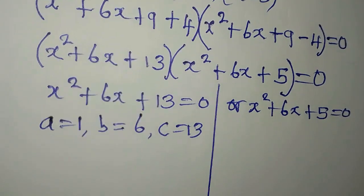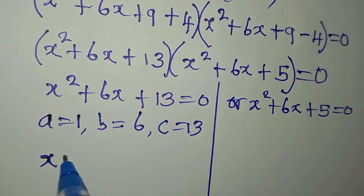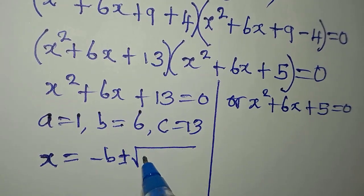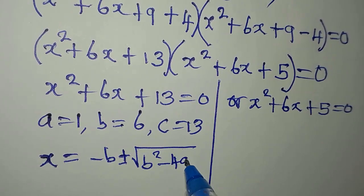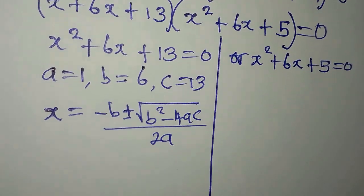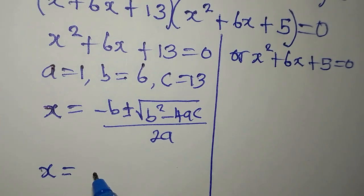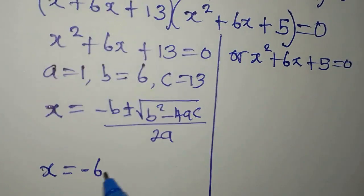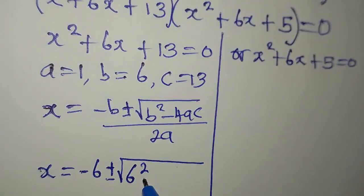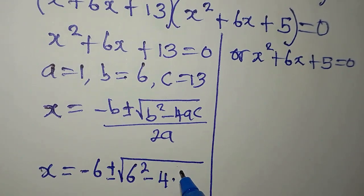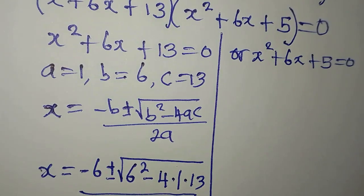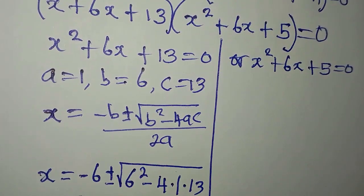Now, the formula we are going to use is: x equals minus b plus or minus square root of b squared minus 4ac, all over 2a. Let's substitute: x will now be minus 6 plus or minus square root of 6 squared minus 4 times 1 times 13, and the whole of this is over 2 times 1.